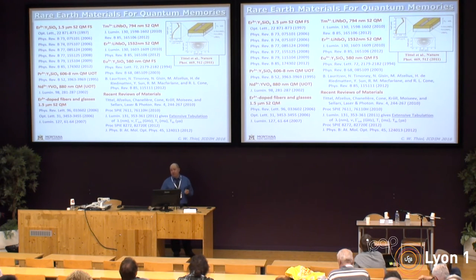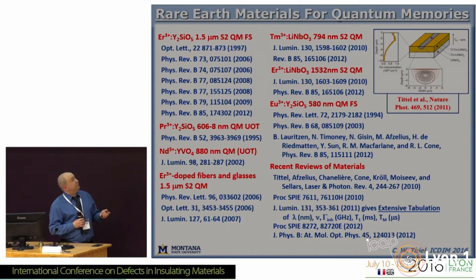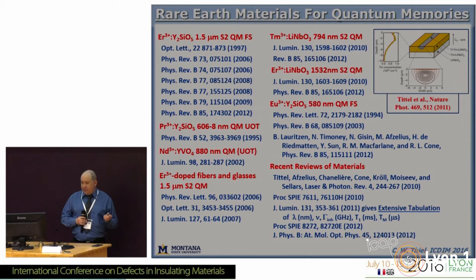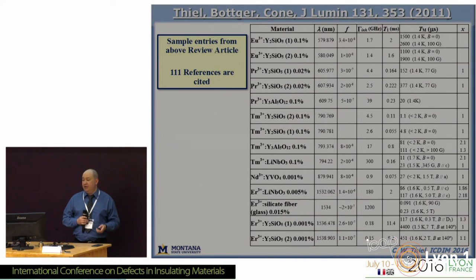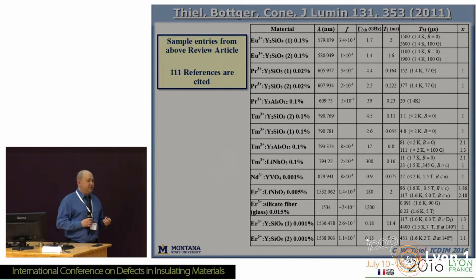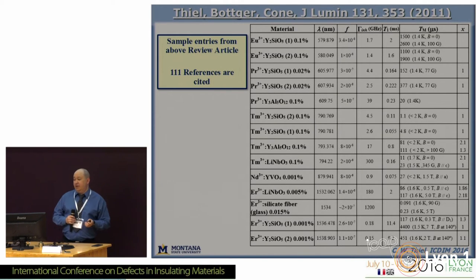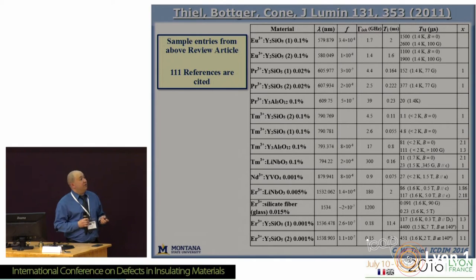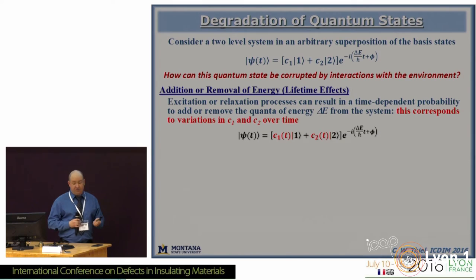Over the years we've studied quite a few materials that are all currently being used in quantum information demonstrations by different groups. There's a long history of understanding the basic physics and chemistry of these materials. Recently we wrote a long review article combining all these known properties of different transitions and different materials with an aspect of what specific properties need to be understood for quantum information applications. This review article provides a large number of these materials with information such as coherence times and inhomogeneous line widths from our work as well as the extensive work from the field.